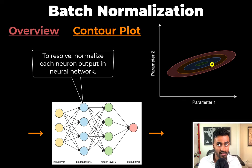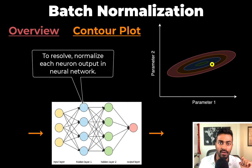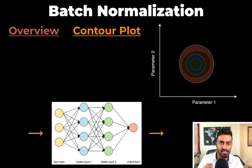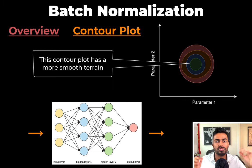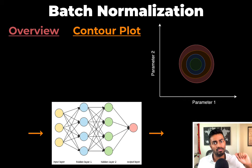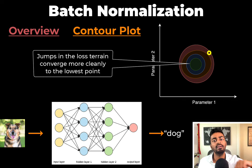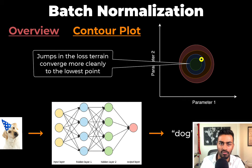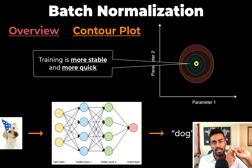To resolve this, we can normalize each neuron output in the neural network. If we were to use batch normalization during training, our contour plot might look more like this — a more smooth terrain. During the training phase, we might start here, and after every iteration, the jump in the loss terrain converges more cleanly to the lowest point. So training is more stable, and also more quick.